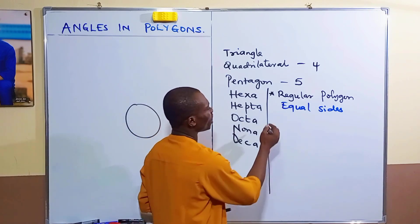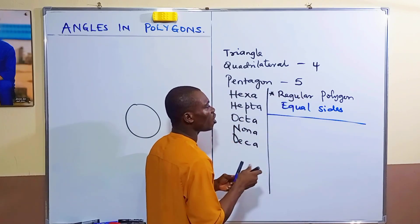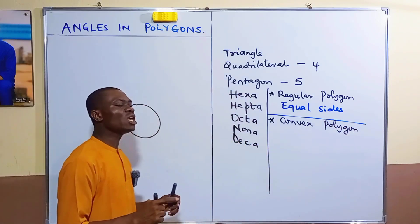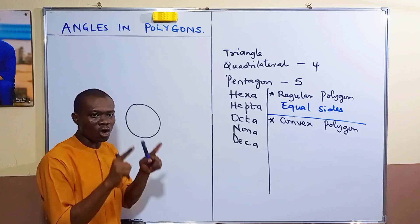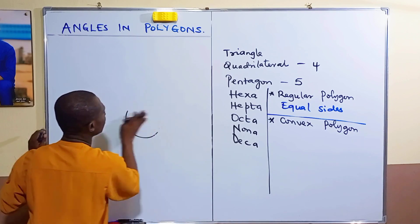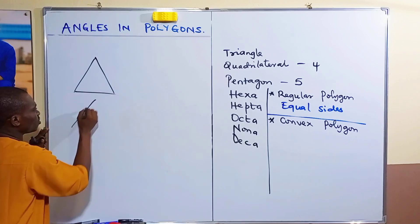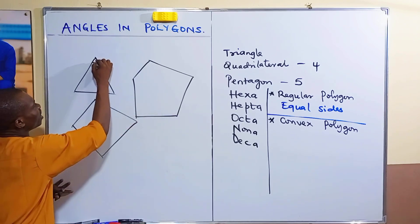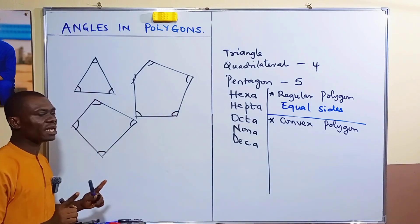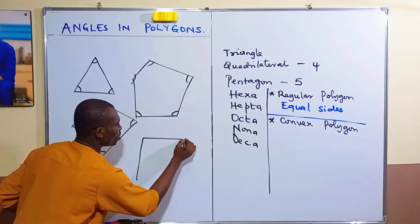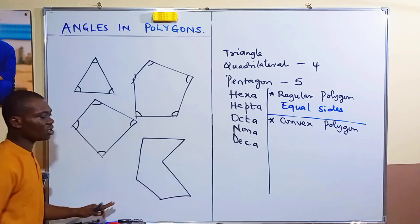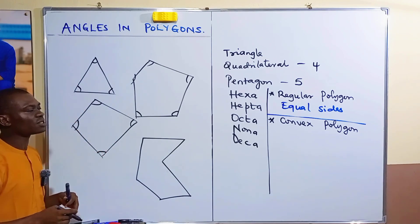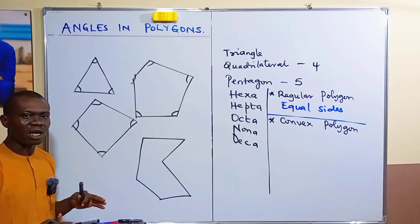The next type we need to look at is a convex polygon. A polygon is convex if all the interior angles of that polygon are non-reflex. For example, this triangle, this quadrilateral, and this pentagon — their interior angles are all inside. When all interior angles of a polygon are non-reflex, you refer to that polygon as convex.